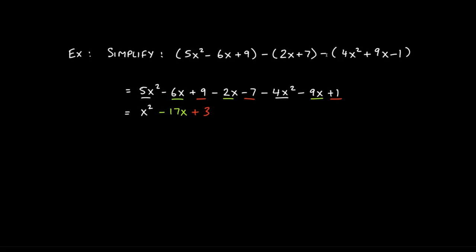This is where students often make mistakes: negative times a negative gives a positive, so that constant becomes positive 1. Now with no parentheses, I combine like terms starting with the highest power. I have 5x squared and negative 4x squared: 5 minus 4 gives 1, so just x squared. By convention, we don't write the coefficient 1 — we leave it as x squared.